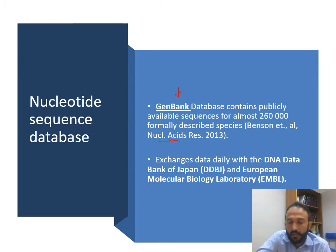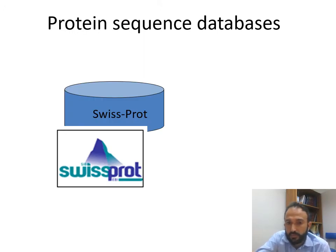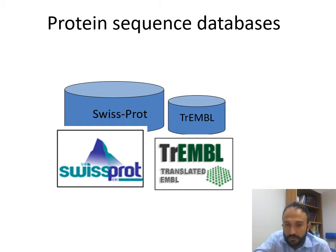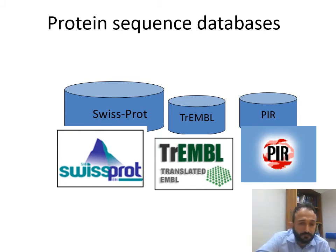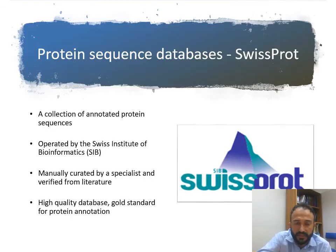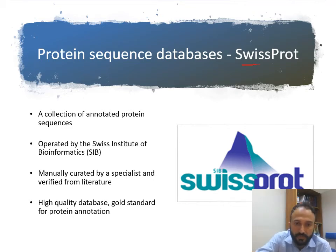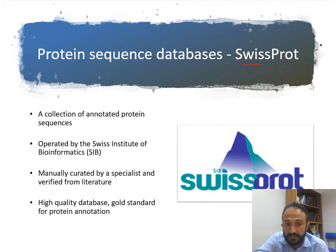For protein databases, the first is SwissProt, the second is TrEMBL — where TR stands for Translated EMBL (European Molecular Biology Laboratory), meaning the DNA sequence is directly translated into protein sequence — and the third is PIR, the Protein Information Resource. SwissProt is a collection of annotated protein sequences operated by the Swiss Institute of Bioinformatics. Its information is manually curated by specialists and verified from literature.